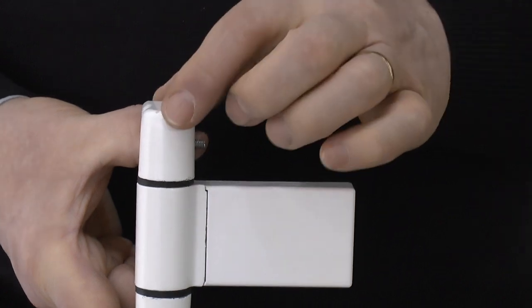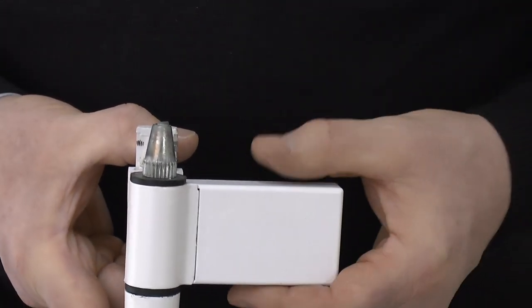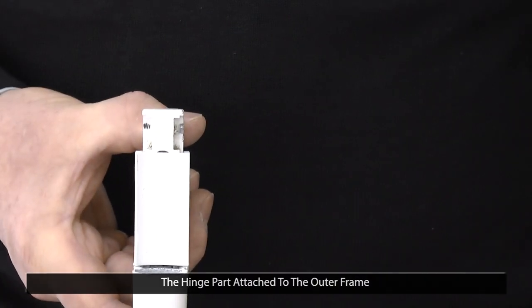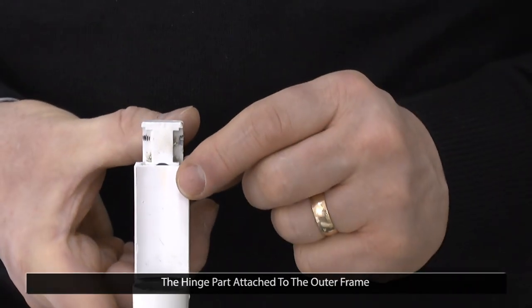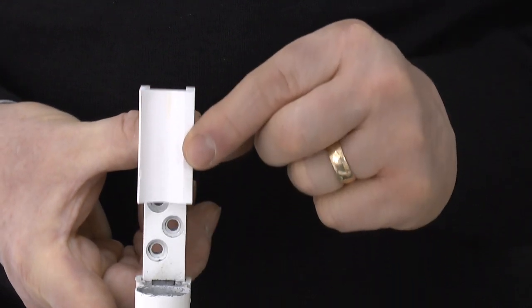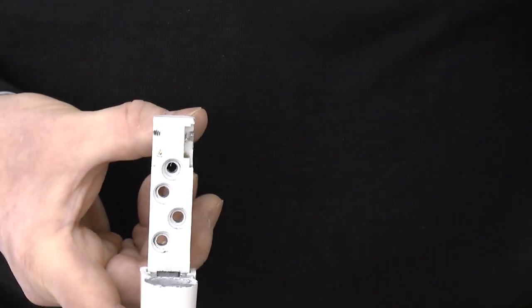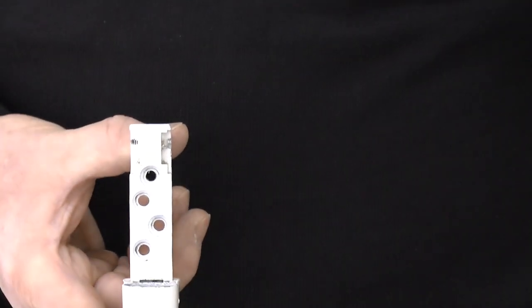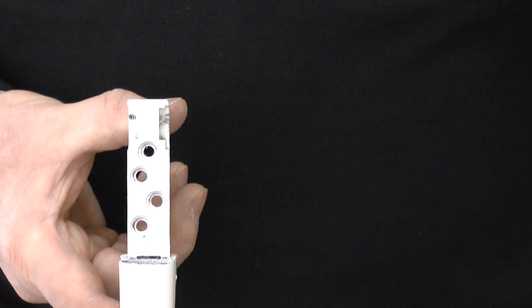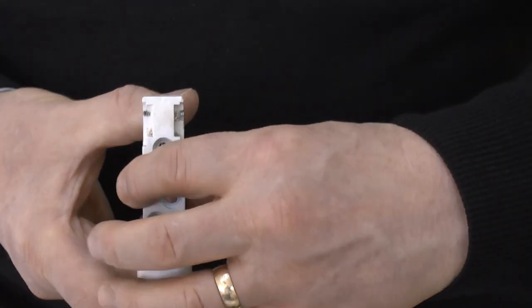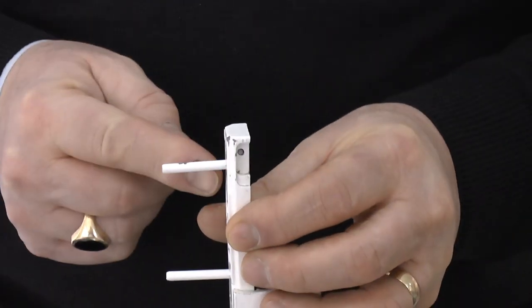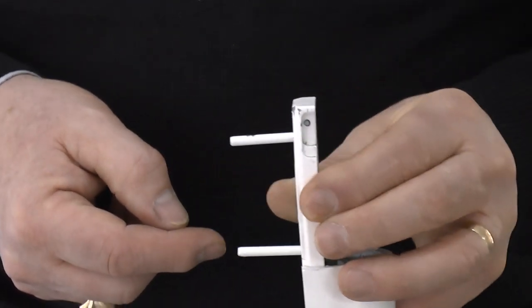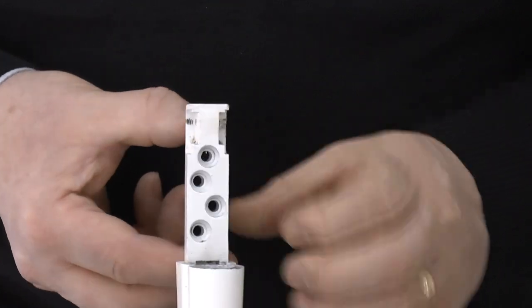Having removed the grub screw, taken the cover off, and lifted the door out, that exposes a plastic plate which you simply slide up. That shows you where the fixings are for the hinge. Remove the screws and pull this away, remembering it's got two pins on the back for stability inside the door.